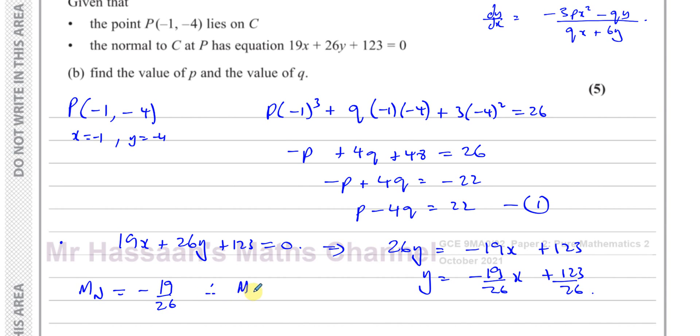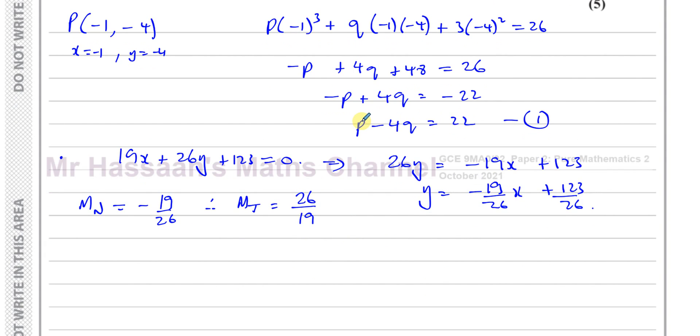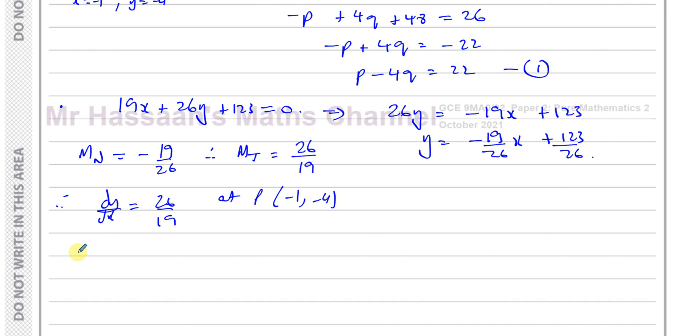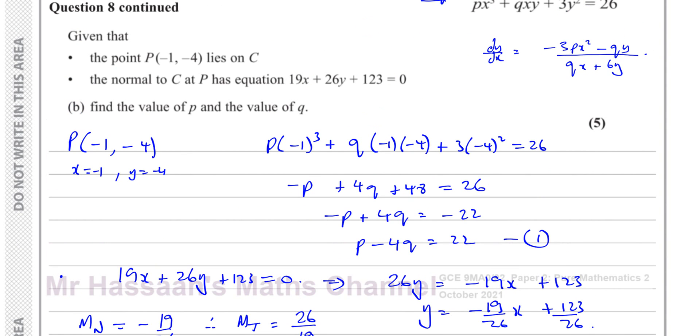Therefore, the gradient of the tangent is equal to the negative reciprocal. So the opposite sign and the fraction upside down. That means that dy/dx, okay, is equal to 26/19 at P(-1, -4). So we can say when x equals -1 and y equals -4, dy/dx is going to be 26/19.